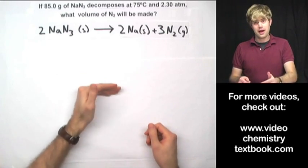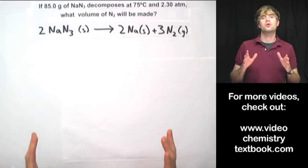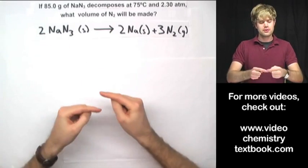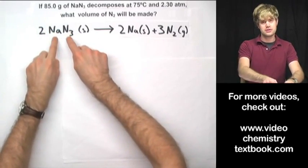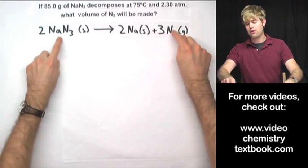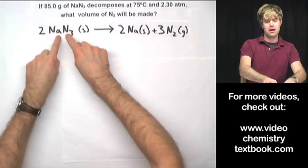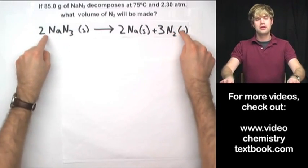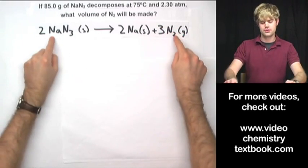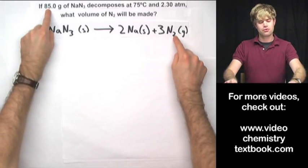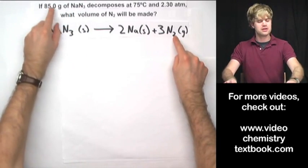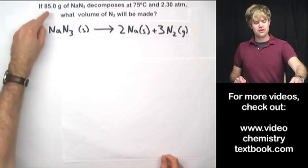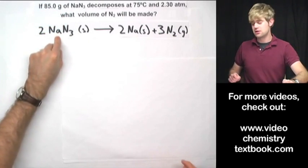Let's start by making a roadmap and talking about the steps we're going to use to solve this problem. We ultimately want to put in a certain amount of sodium azide and find out how much nitrogen gas we're going to get. The only thing we can plug into this equation are numbers in moles, and we're given an amount of sodium azide in grams, not moles. So I can't put 85 grams right into the equation.